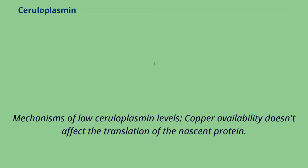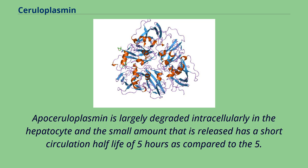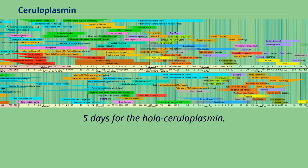Regarding mechanisms of low ceruloplasmin levels: copper availability does not affect the translation of the nascent protein. However, the apoenzyme without copper is unstable. Apoceruloplasmin is largely degraded intracellularly in the hepatocyte, and the small amount that is released has a short circulation half-life of five hours, compared to five days for the holo-ceruloplasmin.